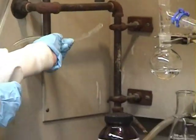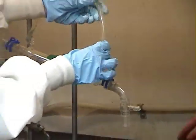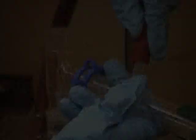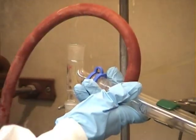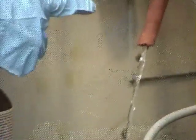Attach the hoses to the condenser. The hose attached to the water is connected to the lower opening of the condenser, and the spare hose is attached to the upper opening of the condenser and directed to flow into the sink. When done correctly, water should flow up the condenser and into the sink.